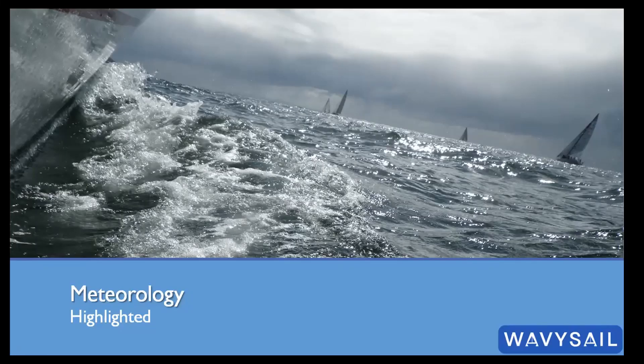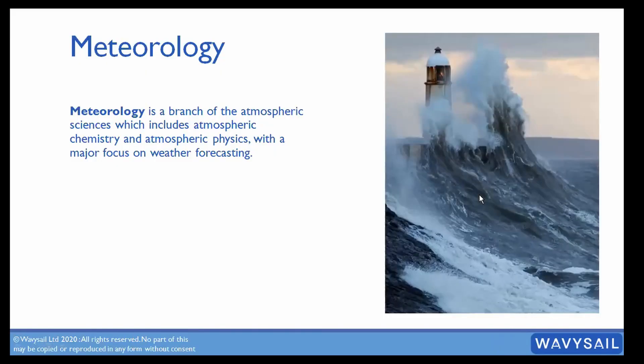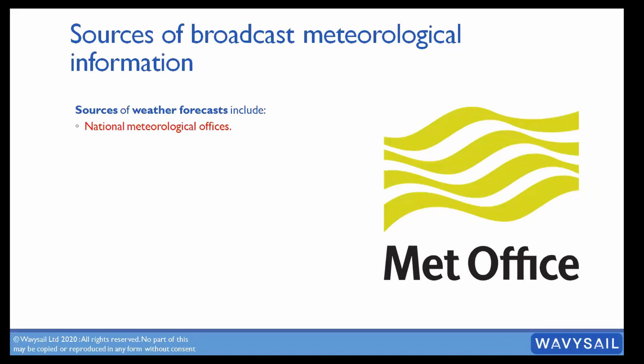Session eight: meteorology is basically the atmospheric sciences, which includes chemistry, physics, and obviously the major focus is on forecasting. Where do we get it from? National meteorological offices — so in the UK it's the Met Office, in Africa the South African Weather Service, in America it comes from the American Weather Services. Most countries have some sort of met office and they share information with each other all the time.